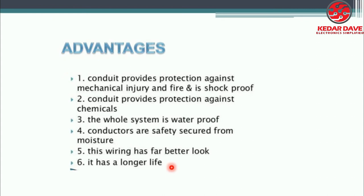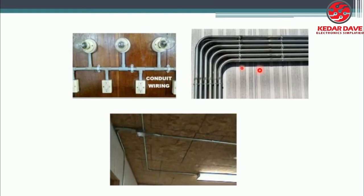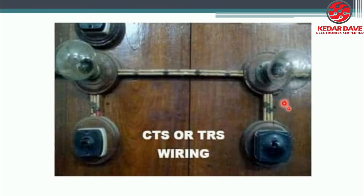The advantages of conduit wiring are that it provides protection against mechanical injury and fire, it is shockproof, provides protection against chemicals, the whole system is waterproof, conductors are safely secured from moisture, and this wiring has a far better look with a longer life. This is an example of CTS or TRS wiring as well.